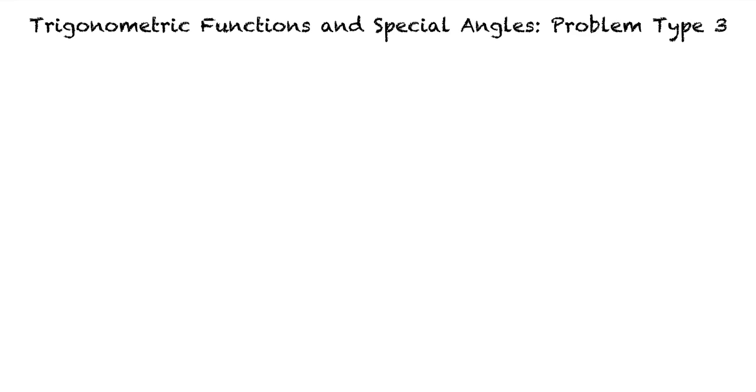Let's take a look at an example problem to get a better understanding of this topic. We are asked to find the exact values below. If applicable, click on Undefined. The tangent of 660 degrees and the cosecant of negative 3 pi over 4. How can we start problems of this type?